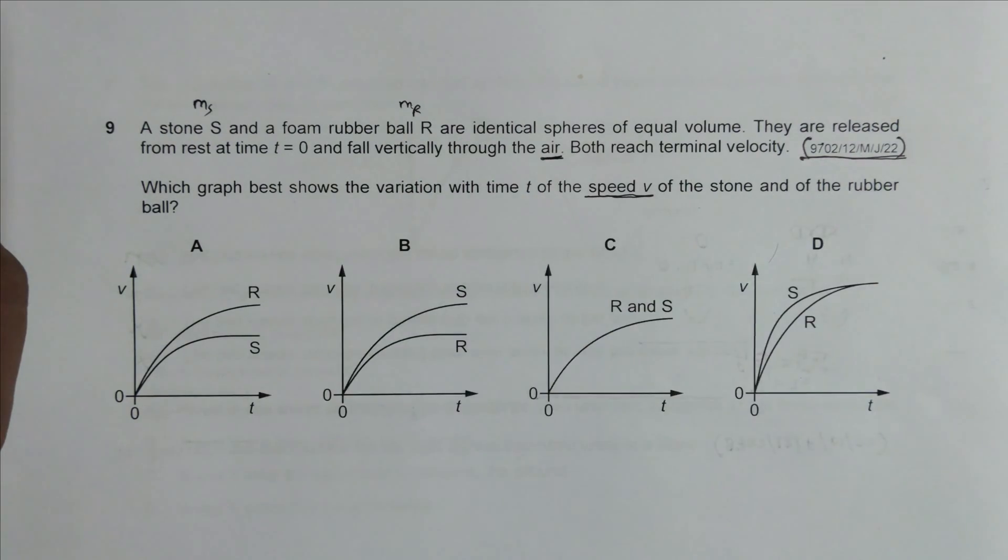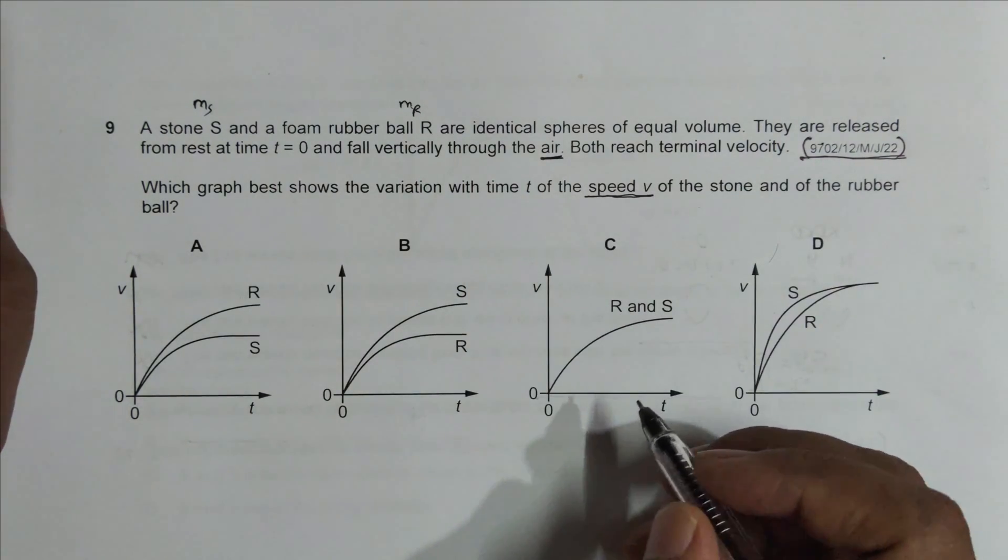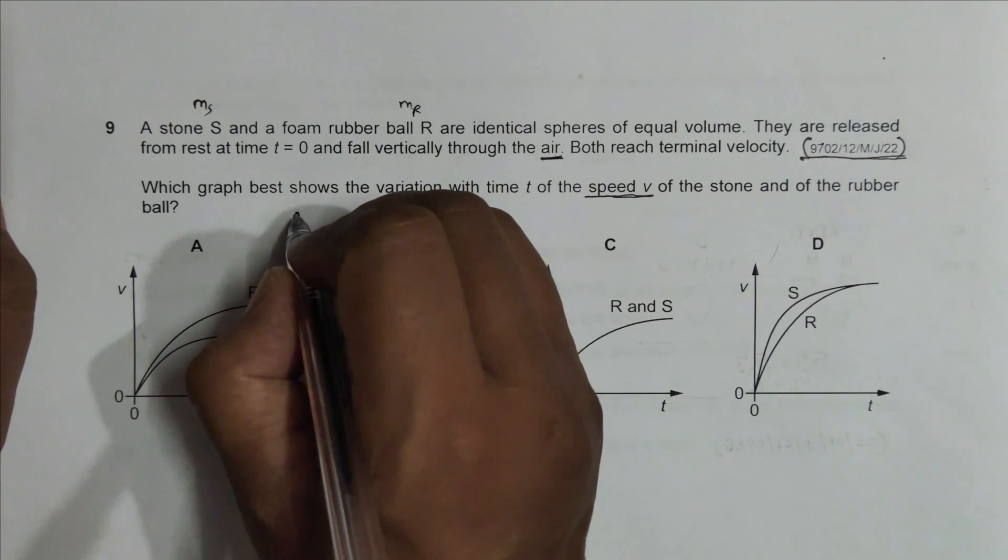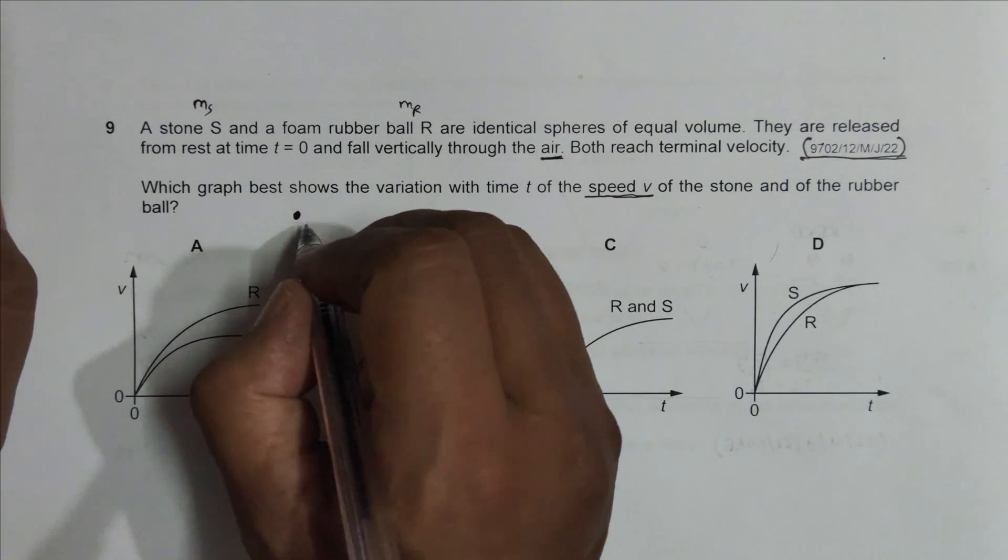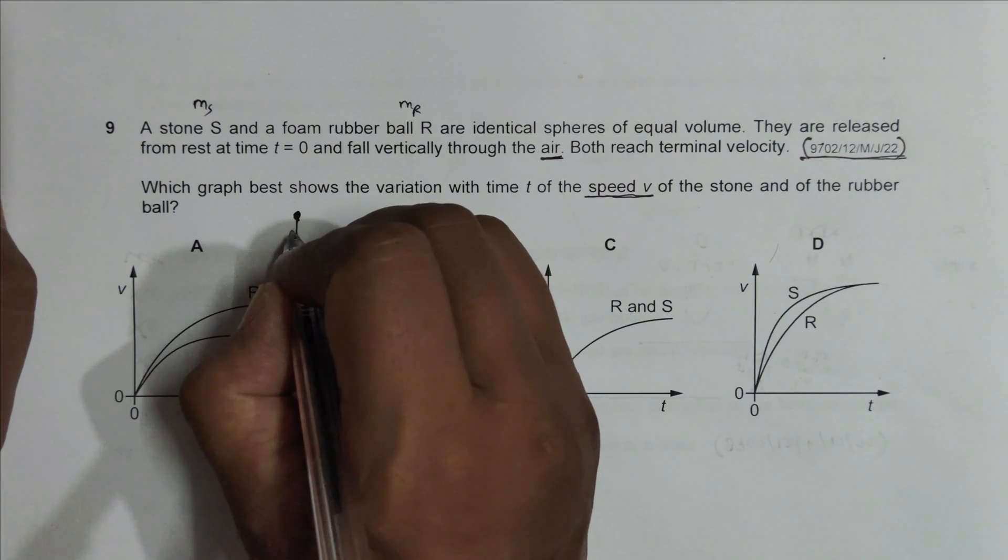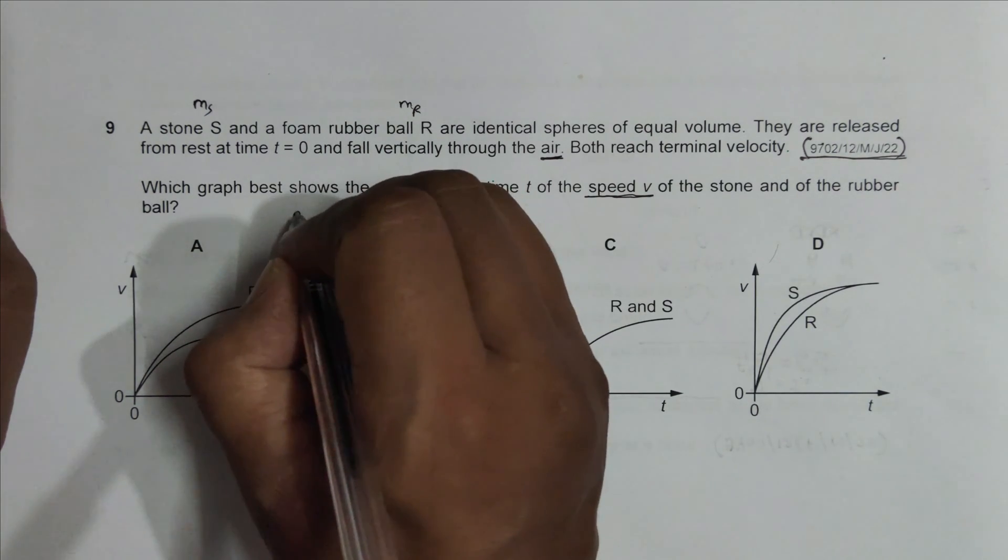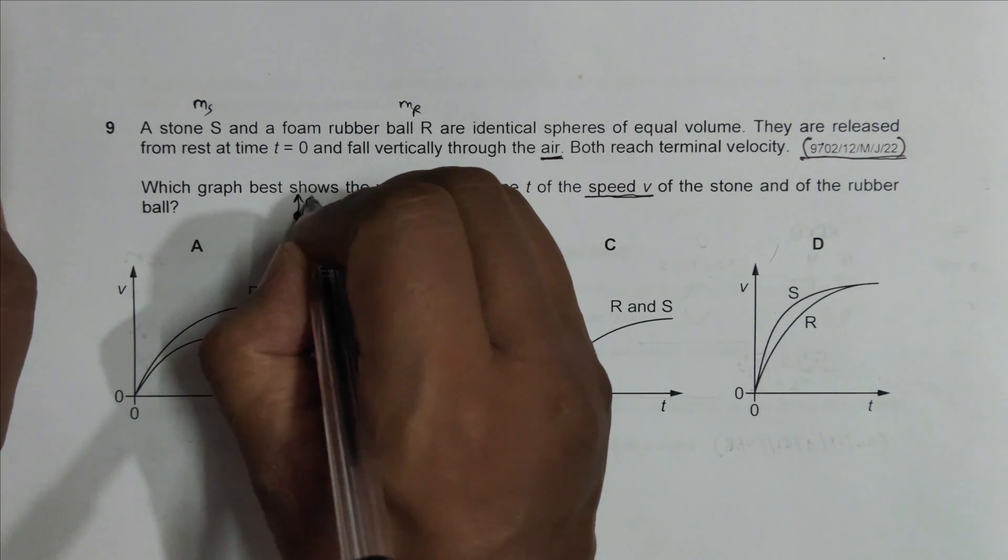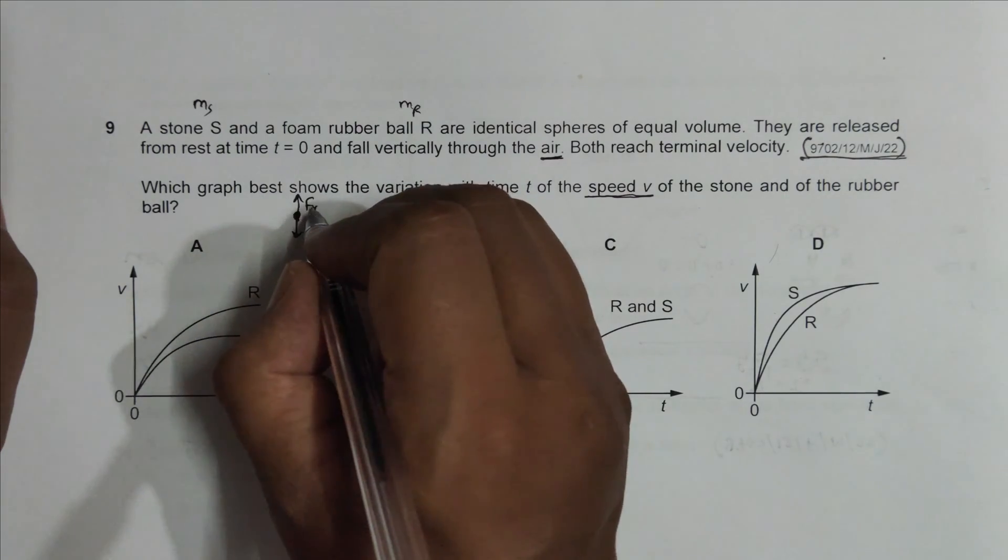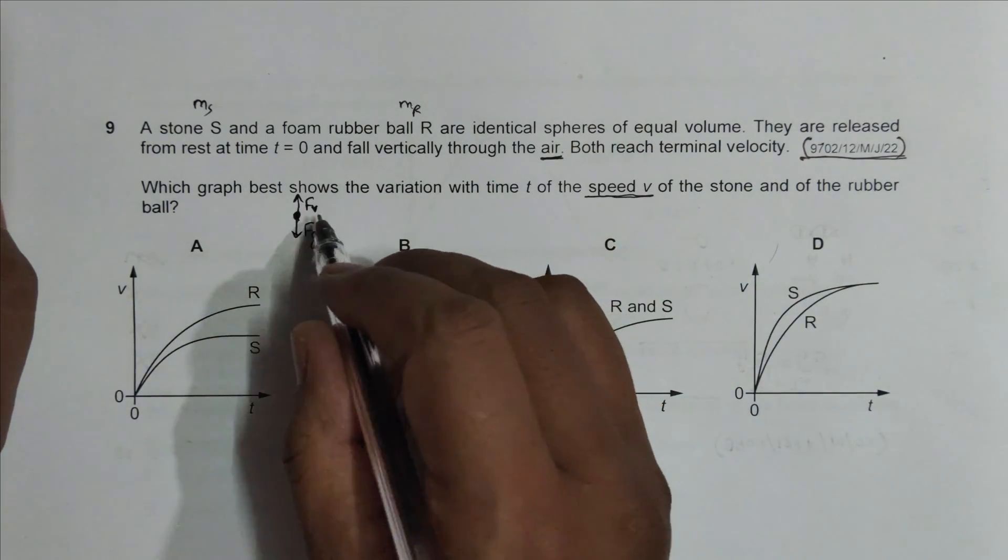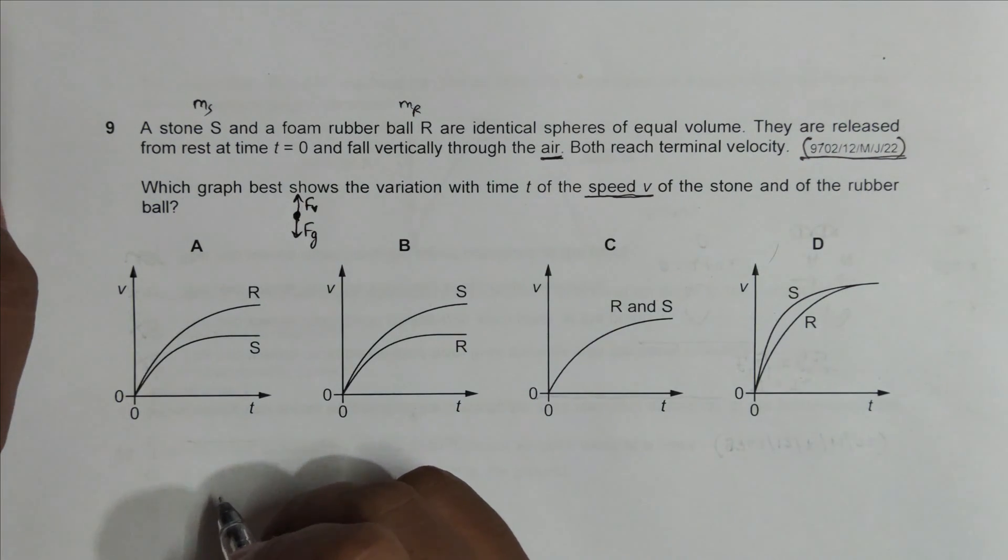What happens during terminal velocity when the balls fall? We have the force of gravity here and the opposing force here, which is the viscous force. Other forces are not given, so they should be equal.